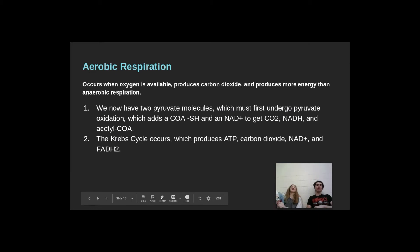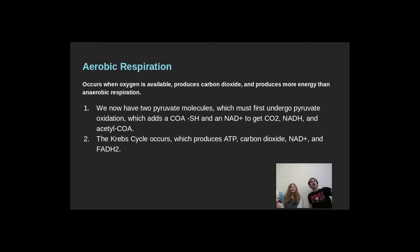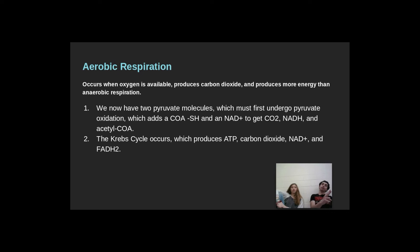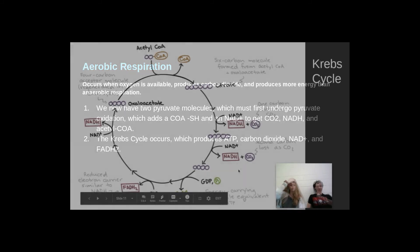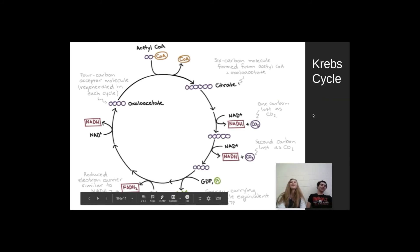Aerobic respiration occurs when oxygen is available and produces carbon dioxide and more energy than anaerobic respiration. We have two pyruvate molecules. The Krebs cycle occurs after we get acetyl-CoA, which produces ATP, carbon dioxide, NAD+, and FADH2. The NAD+ produced is critical for the process. Here is a simplified version of the Krebs cycle.